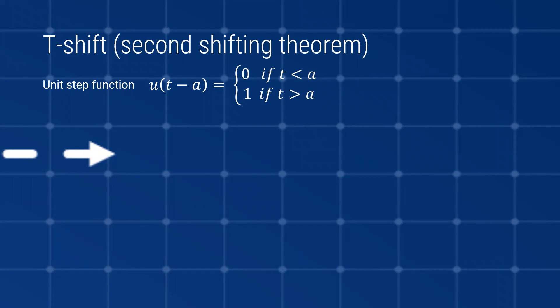The unit step function looks like the following: we have u(t - a), which is equal to 0 or 1 depending on where we are. If we are at a value before a, the function is 0; if we are at a value above a, the function changes to 1. You can think of this like a switch — the voltage before you turn on the switch is 0, and as soon as you turn it on the voltage is 1. You can do similar things with computers using 0s and 1s depending on voltage or other inputs.